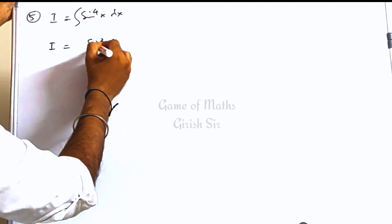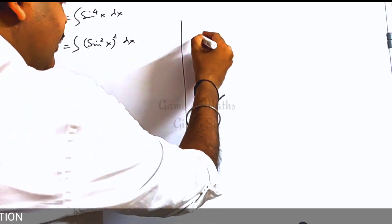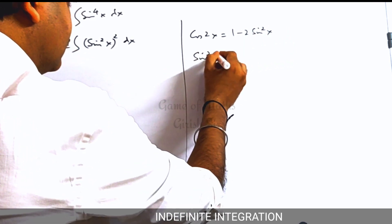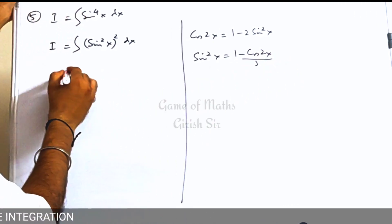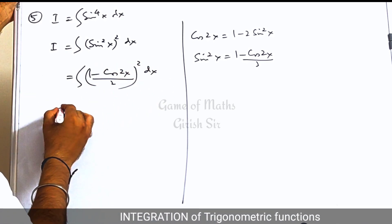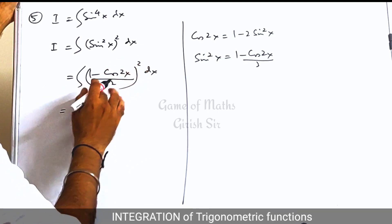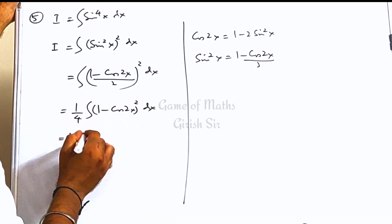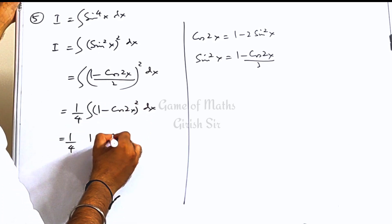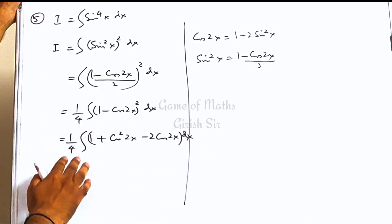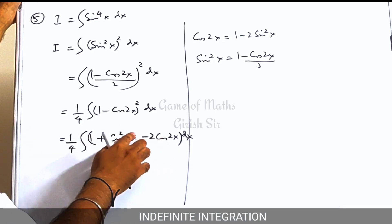The next question is the integral of sin x to the power 4. You can write this as (sin squared x) whole squared. Now if you use the formula for cos 2x, you can replace sin squared x with (1 minus cos 2x) divided by 2. Taking 1/4 out of the integral, now use the formula of (a minus b) whole squared. Out of these three terms, cos squared 2x is not directly integrable, so we will try to make it linear.